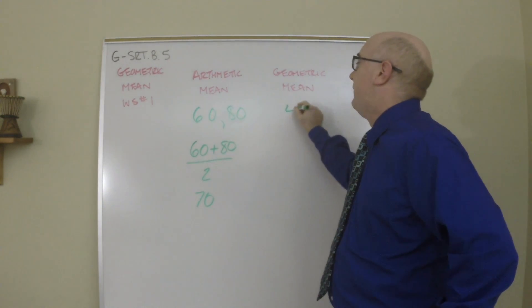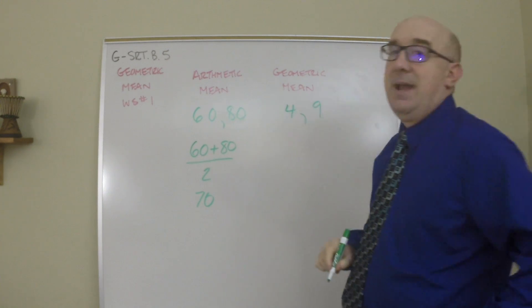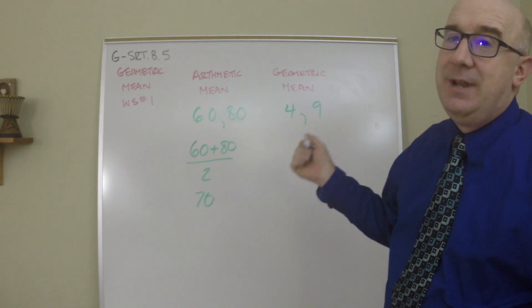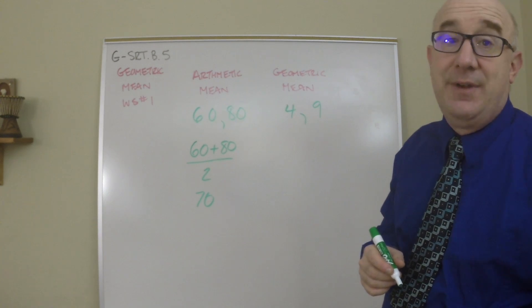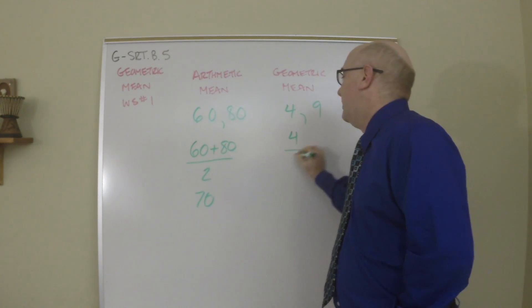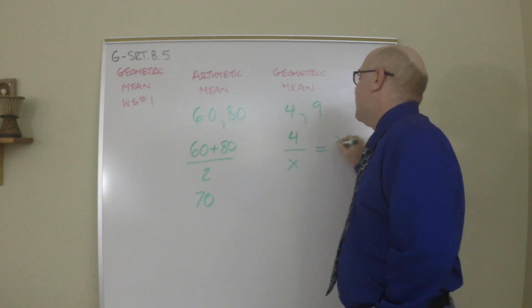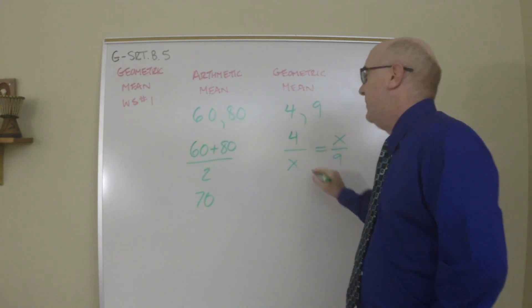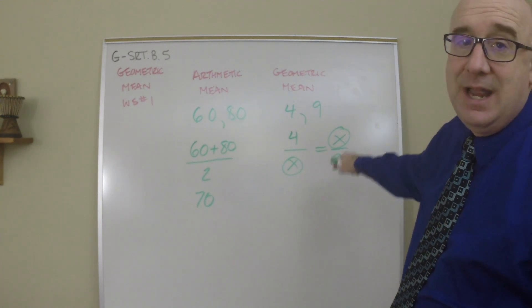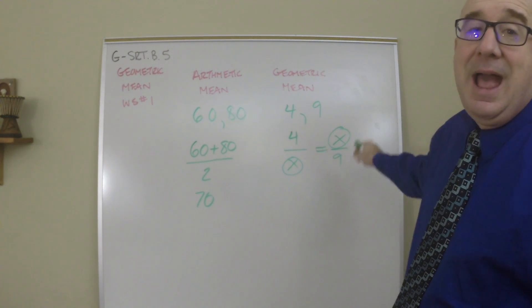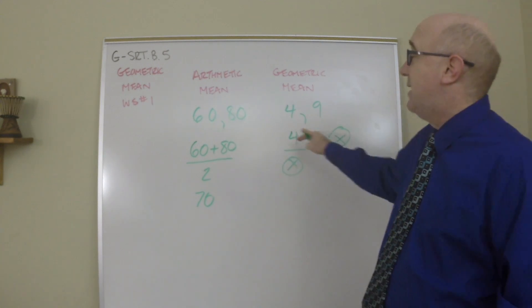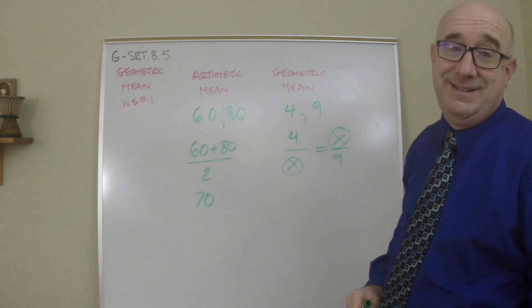For instance, if the two numbers were 4 and 9, and you wanted the geometric mean between them, you don't add them together to get 13 divided by 2 to get 6 and a half. You create a proportion, 4 is to x as x is to 9. This proportion is very unique because the denominator's value and the numerator's value has to be the same number.